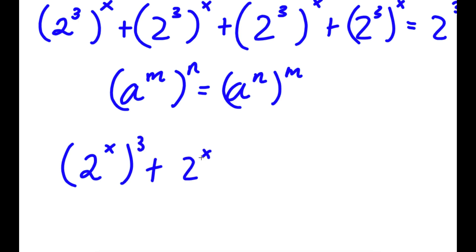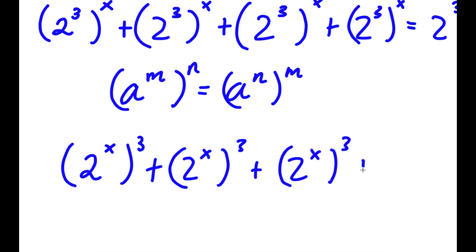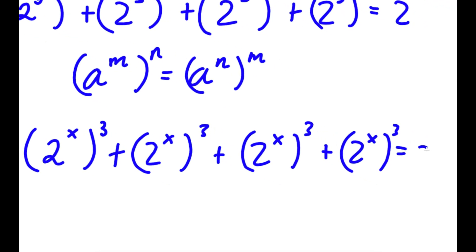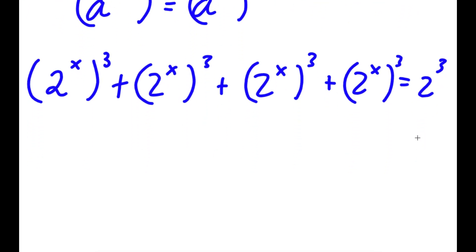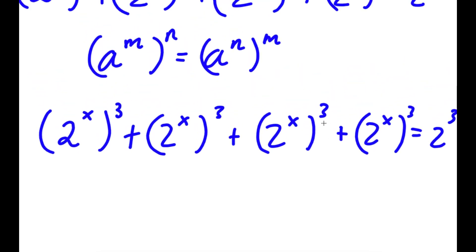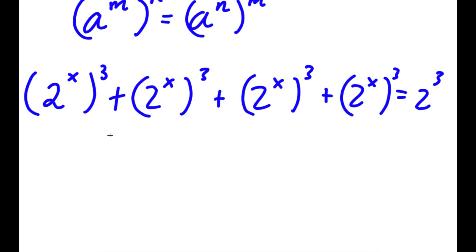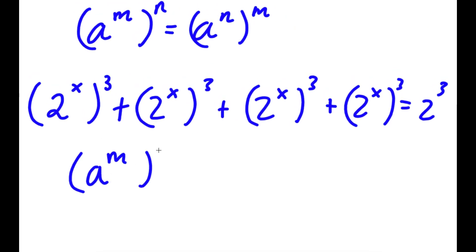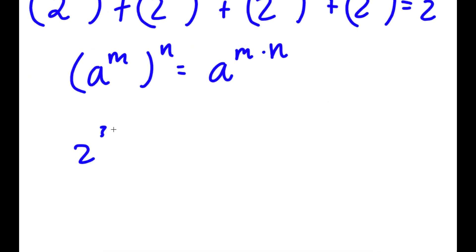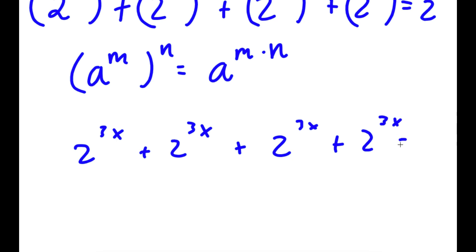So now I have 2 to the power of x to the power of 3, four times, equal to 2 to the power of 3. And since a to the power of m to the power of n equals a to the power of m times n, this simplifies to 2 to the power of 3x, four times, equal to 2 to the power of 3.